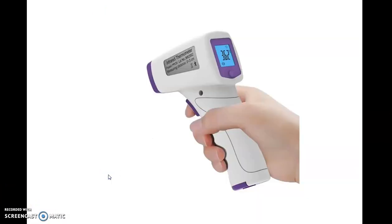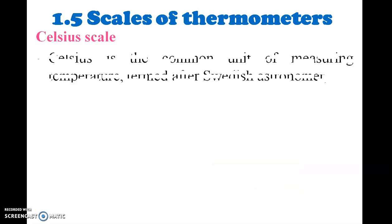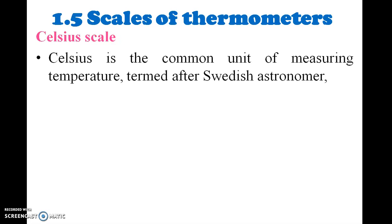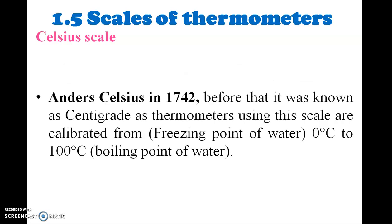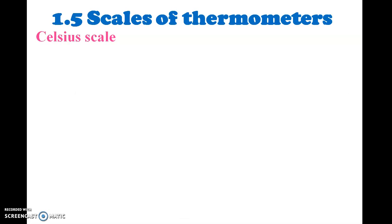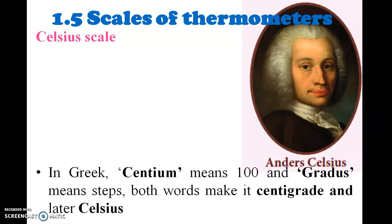Another thermometer is the infrared thermometer, which is available nowadays. Regarding scales of thermometers — Celsius is a common unit of measuring temperature. It is named after astronomer Andrew Celsius in 1742. Before that it was known as centigrade. Thermometers using this scale are calibrated from 0 degrees to 100 degrees. In Latin, centum means 100 and gradus means steps — both words make centigrade, which later became Celsius.